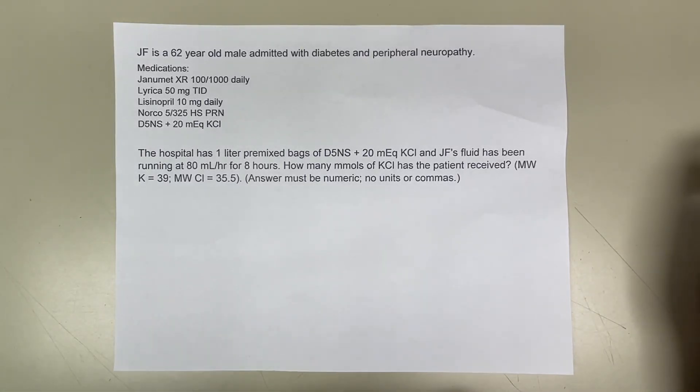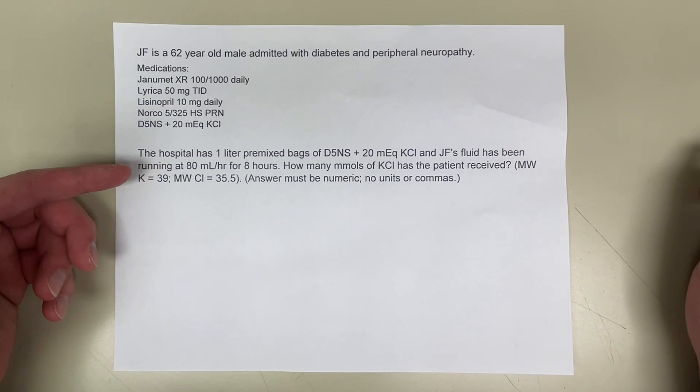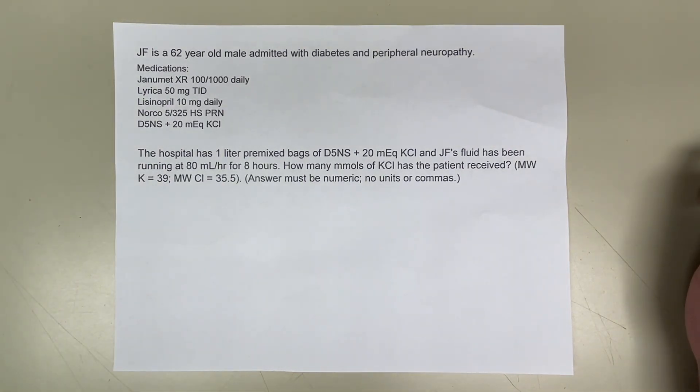Patient is a 62-year-old male admitted with diabetes and peripheral neuropathy. List of medications. The hospital has 1 liter premixed bags of D5-NS plus 20 milliequivalents potassium chloride, and the patient's fluid has been running at 80 milliliters per hour for 8 hours. How many millimoles of potassium chloride has the patient received? Molecular weight of potassium is 39, molecular weight of chloride is 35.5.